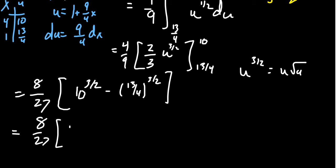And then we're going to get minus 13 root 13 over 4 root 4. Now, notice 4 is a perfect square. The square root of 4 is 2. So 4 times 2 is, of course, an 8.